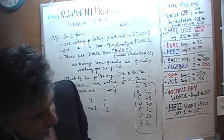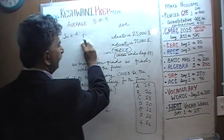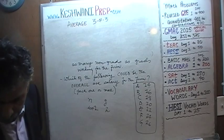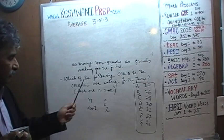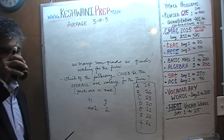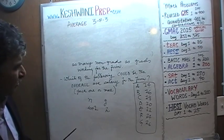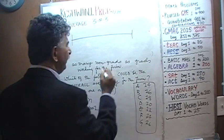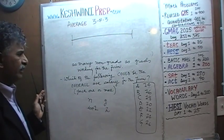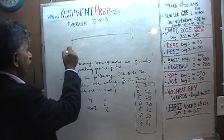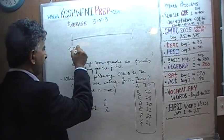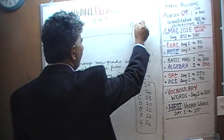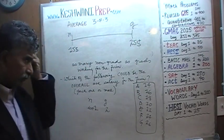Let's begin. First, let's determine the range for the overall average. Non-college graduates have an average salary of $15,000, and college graduates have an average salary of $25,000. If you had a million people with no degrees and only one person with a college degree, the overall average salary would be very close to $15,000 — but it can never go below $15,000, and it cannot even equal $15,000.